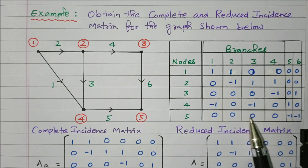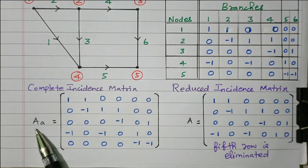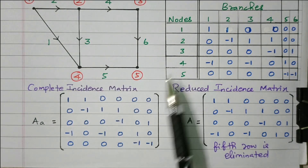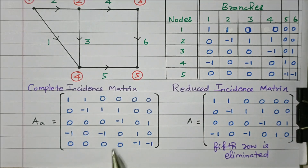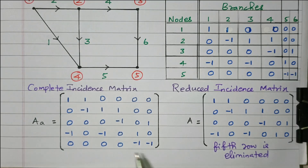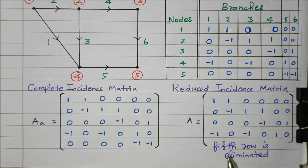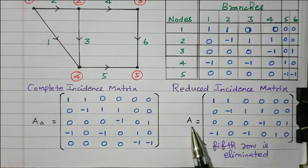Now we can write these values in matrix format. A suffix 'a' represents the complete incident matrix with five rows and six columns. From this, if the fifth row is eliminated — we can eliminate any row, either the first, second, or any row — the remaining four rows form the reduced incident matrix, represented by A.